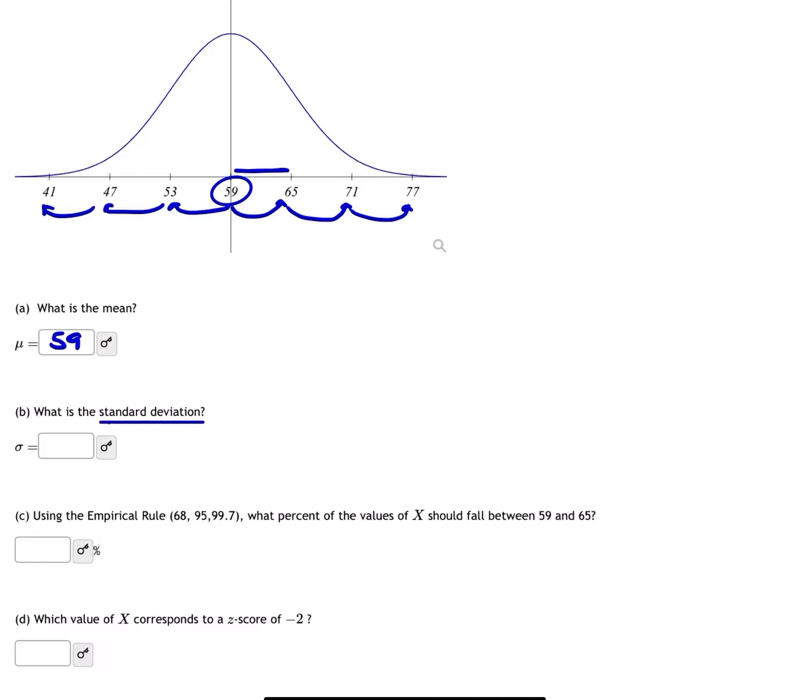You're going to do 65 minus 59 which will give you 6. If you notice, it's a difference of 6 to each number to the right and to the left. You could subtract 6 each time if you're going to the left. That's your mean and your standard deviation.